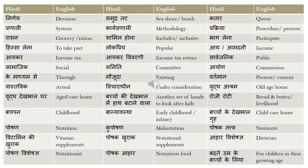'Ration' means grocery or ration — you can say either of the two words. 'Shamil hona' means includes or inclusive. For example: 'yah karya is pranali mein shamil hai' — this task is included in this system. 'Bhaag lena' means to participate.